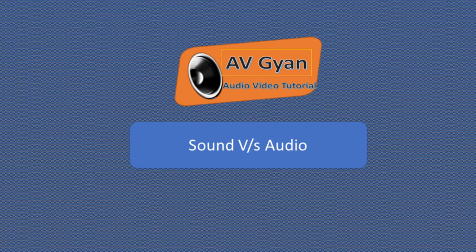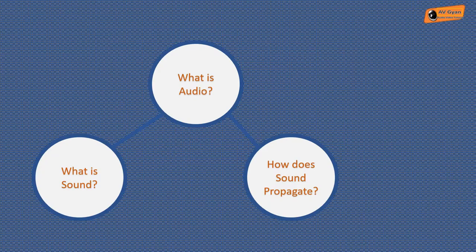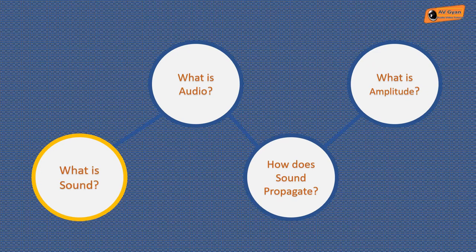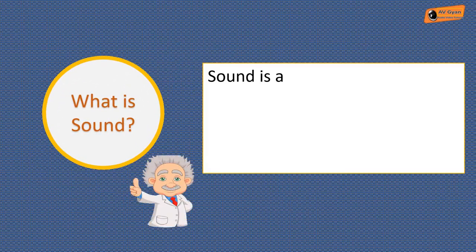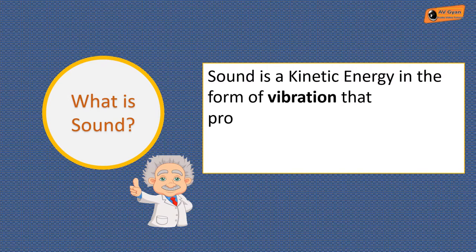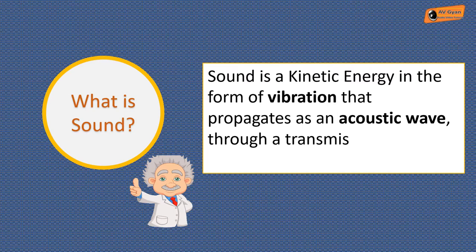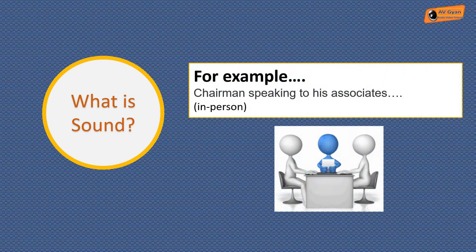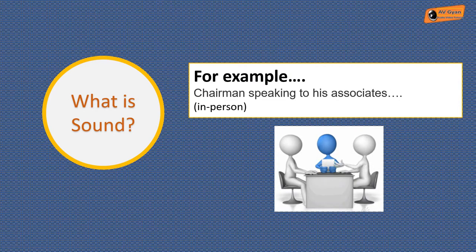Today we are going to see what is sound, what is audio, how does it propagate, and what is the amplitude of sound. So let's start with what is sound. Sound is a kinetic energy in the form of vibration that propagates as an acoustic wave through a transmission medium such as a gas, liquid, or solid. For example, a chairman is speaking to his associate in person in a meeting room. The voice that is traveling across the room would be called sound.